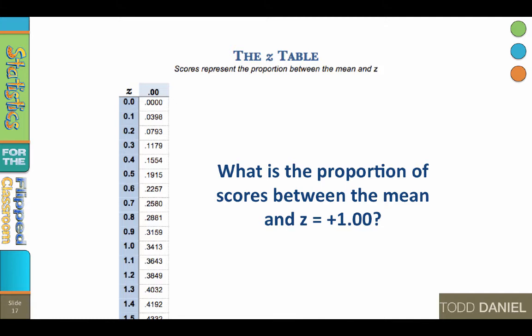Right now you are seeing only the first column of the z-table, so that I can teach you how to use it. The important thing to remember is that the values in this z-table tell the proportions of the scores between the mean and a given z-score.